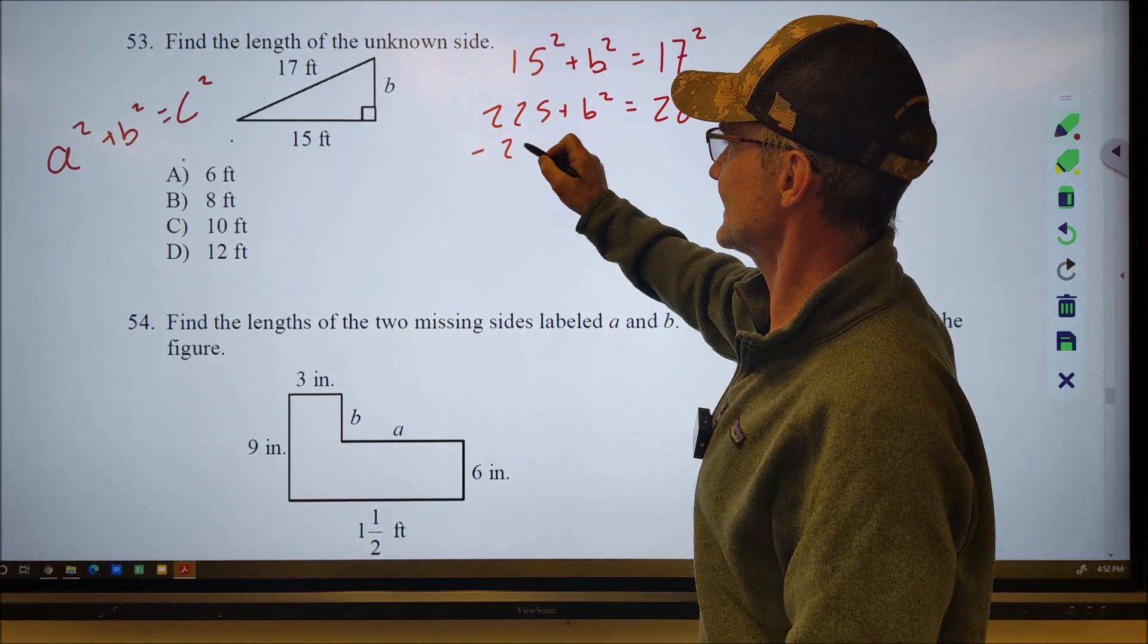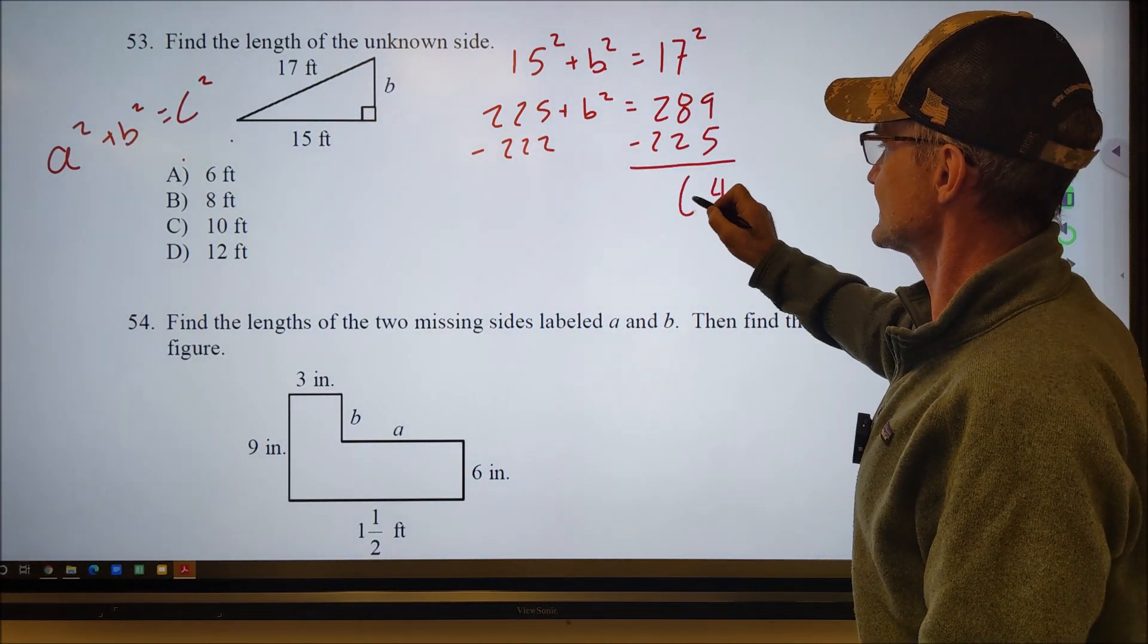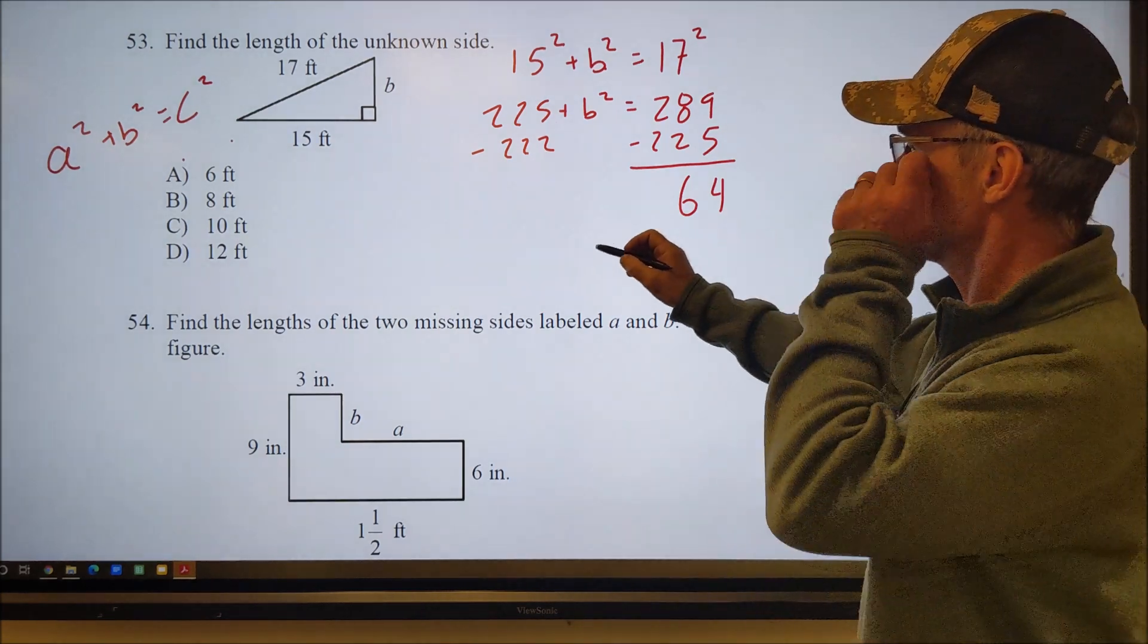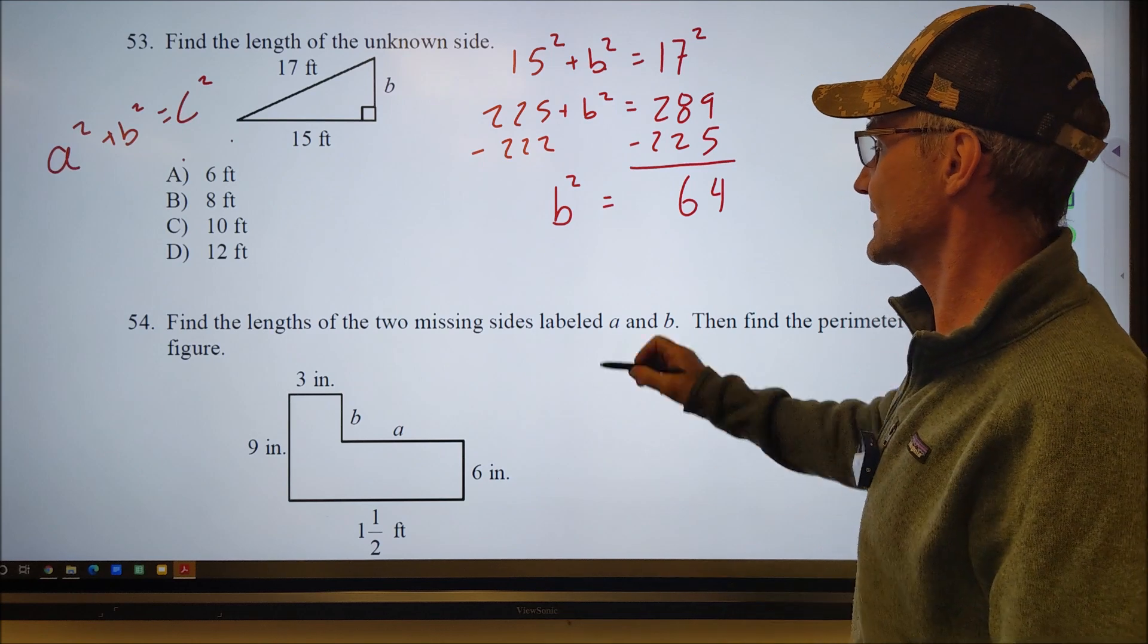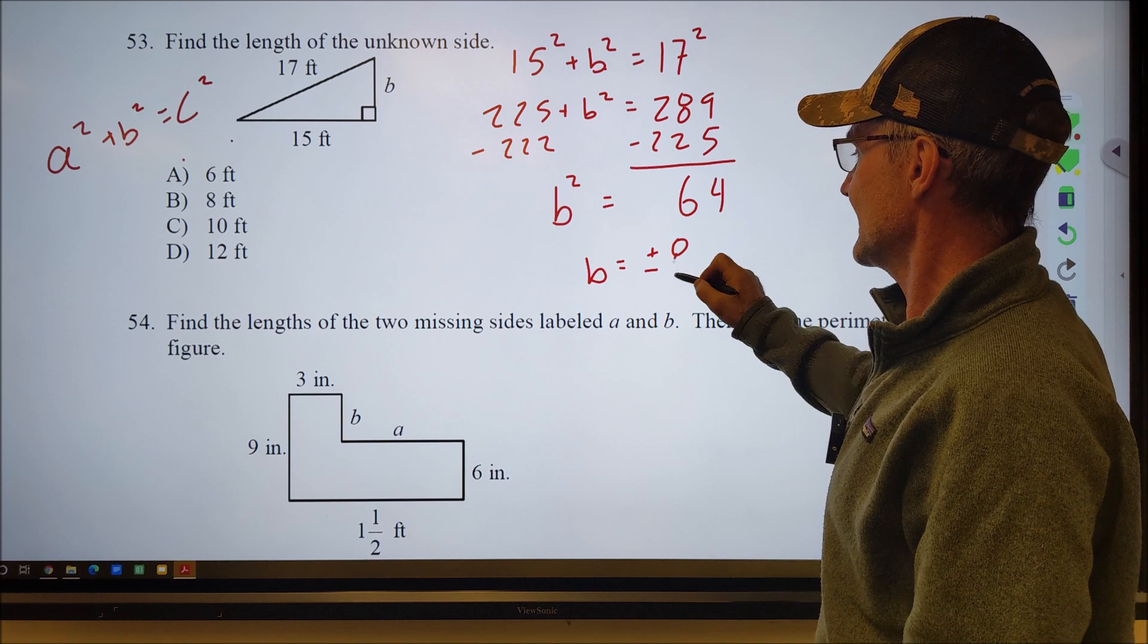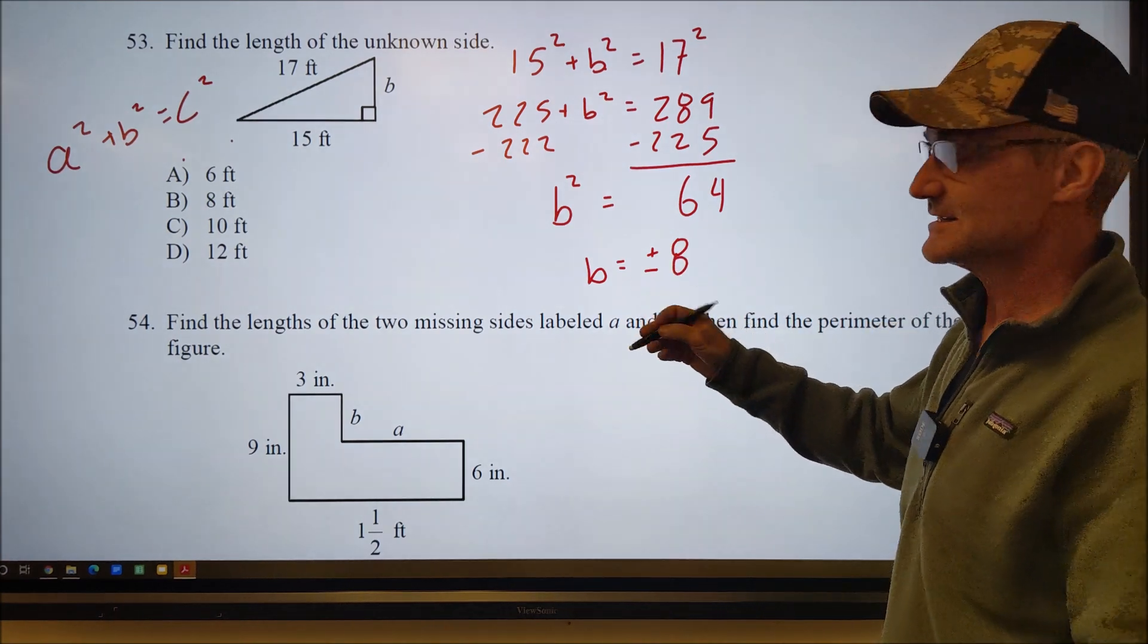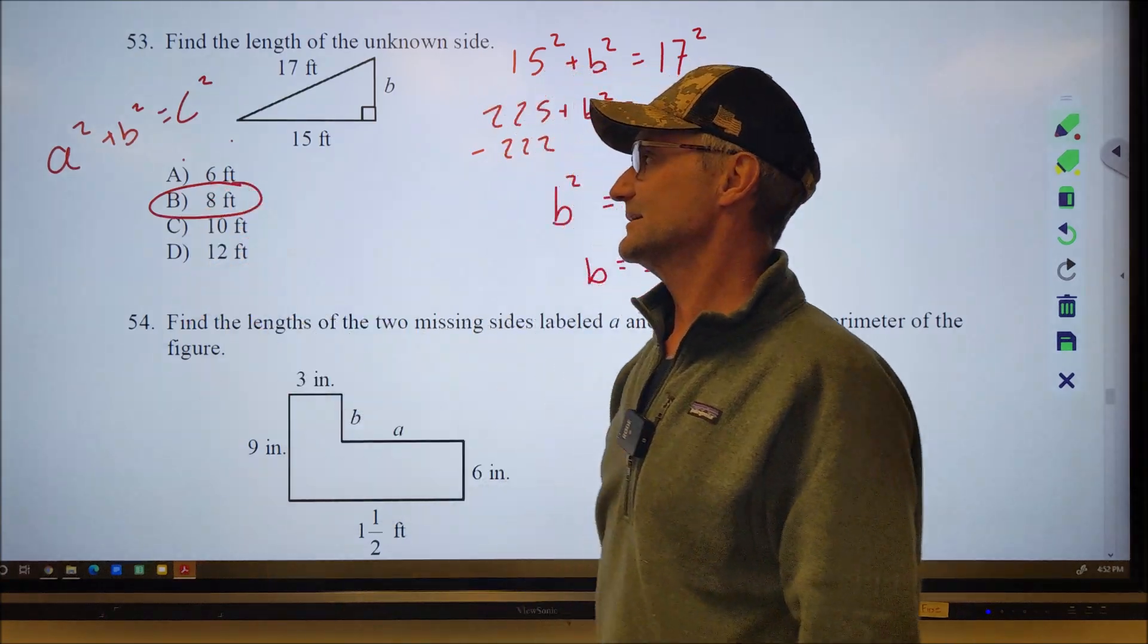15 squared is 225 plus B squared equals 17 squared. That's 289. And then I'm going to take 225 from both sides. 289 minus 225 is 4 and 6, which is 64. So B squared is equal to 64. I take square root of both sides and B is equal to plus or minus 8. However, a negative answer doesn't make any sense. So I discard that one. So the correct answer is B, 8 feet.